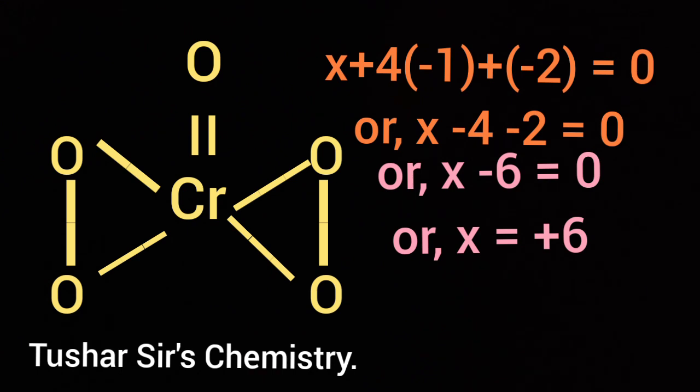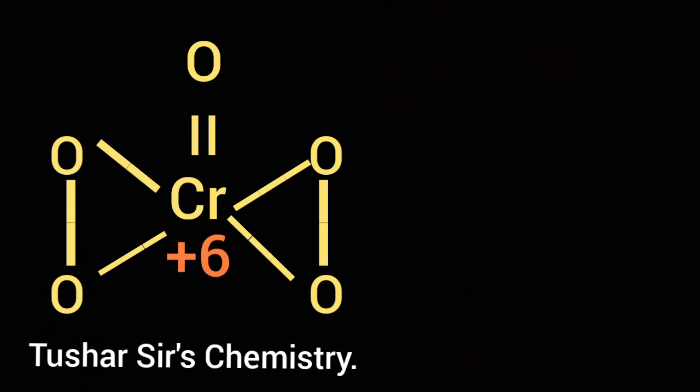The oxidation number of chromium in CrO5 is found to be plus 6. Thank you for watching the video till the end.